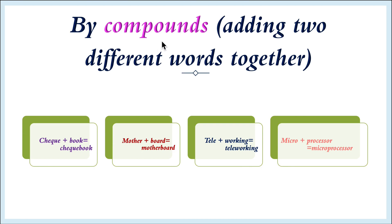Next, by compound words — that is, adding two different words together. For example, 'check' and 'book' together make 'checkbook'. Likewise, 'mother' and 'board' become 'motherboard'; 'tele' and 'working' become 'teleworking'; 'microprocessor' is also formed this way. With the help of compound words we can also learn new words and terms.